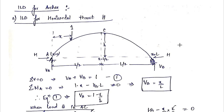Let us first consider Case 1, in which the rolling load is in part AC. To find the equation of horizontal thrust, we apply summation of bending moment about the crown point C, where there is an internal hinge, equal to 0.